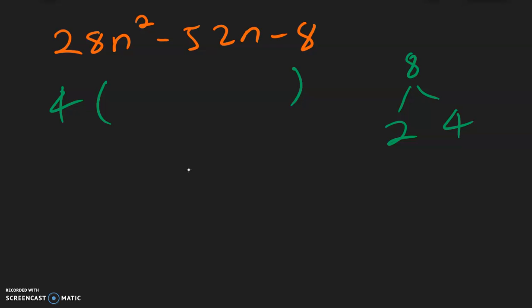So 28 divided by 4 is going to be 7n squared. Negative 52 divided by 4 is going to be a negative 13n. And 8 divided by 4 is going to be a 2. So we have a negative 2 over here.